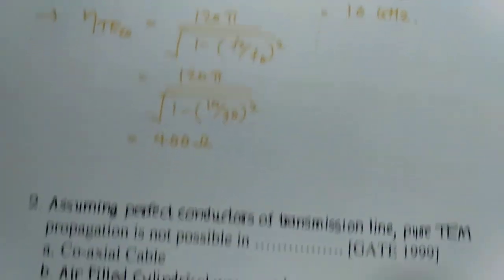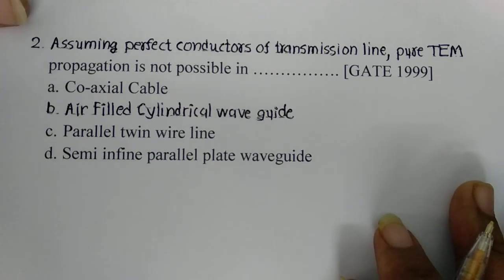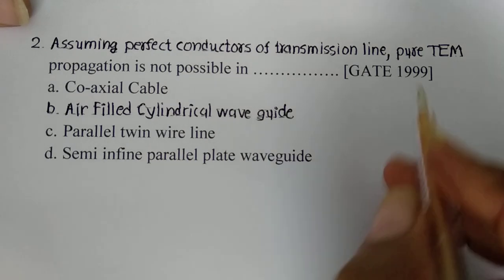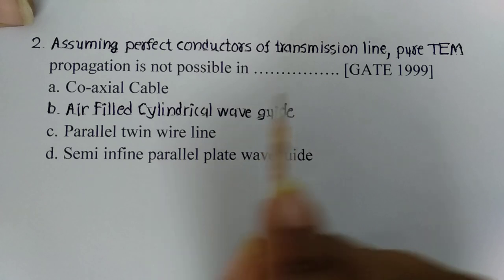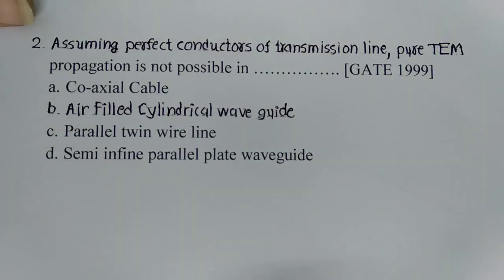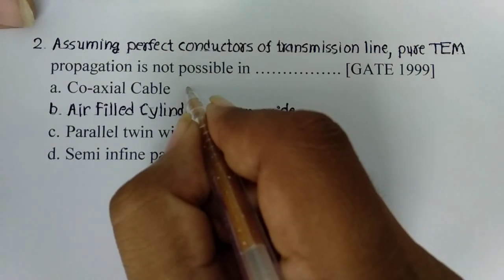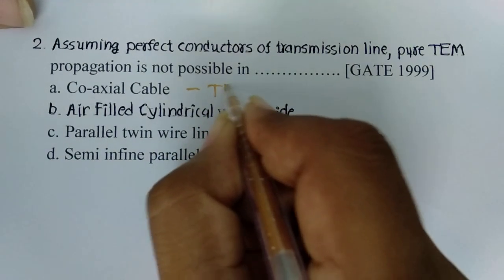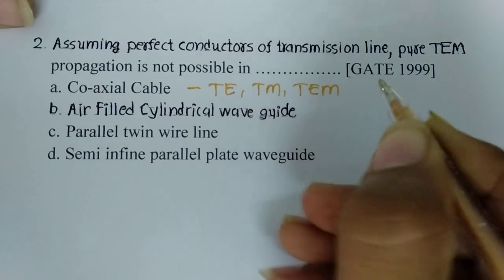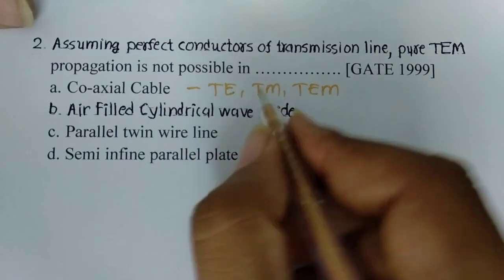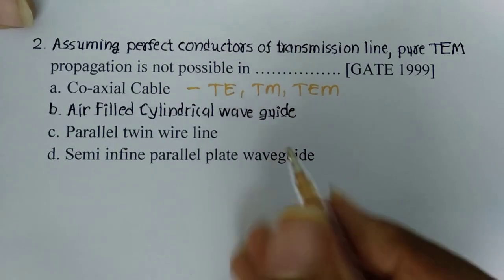Now let us look at another example. Assuming a perfect conductor transmission line, pure TEM propagation is not possible in which case? Four cases are given. First is coaxial cable — coaxial cable can allow TE, TM, as well as TEM modes, so all three modes are possible, meaning pure TEM is possible.